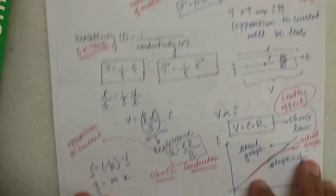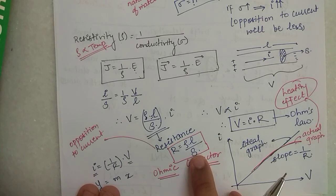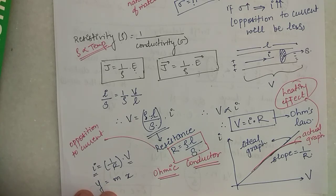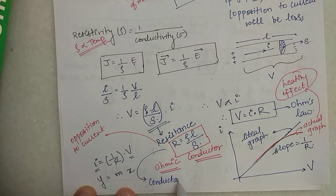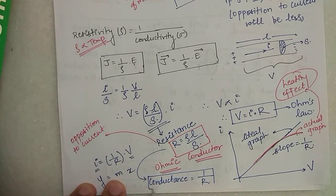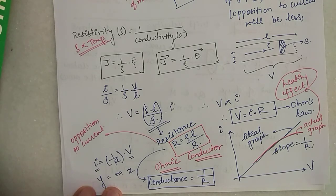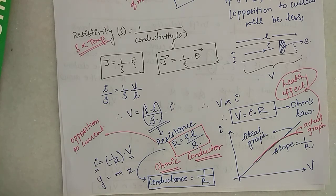Resistance is defined as resistivity times the length of the conductor divided by the cross-section area S. One final thing — there is something called conductance, and conductance is simply 1/resistance. So this lecture is now complete. In the next lecture we will start with temperature dependence of resistivity and then continue properly with current electricity. Thank you.